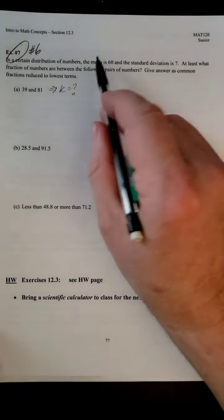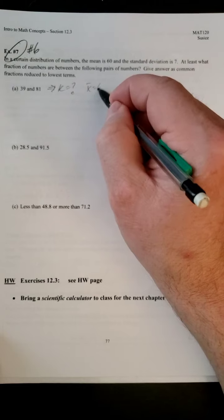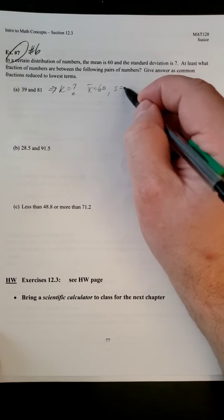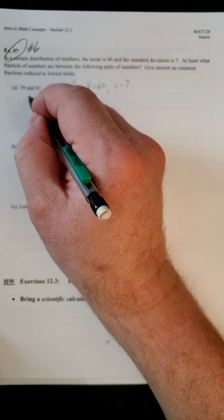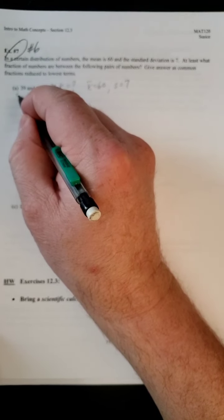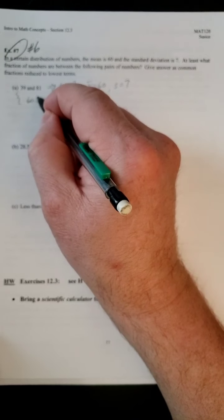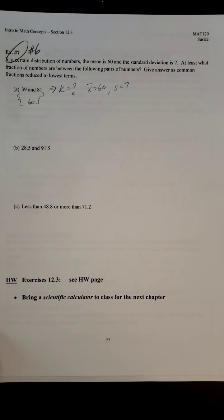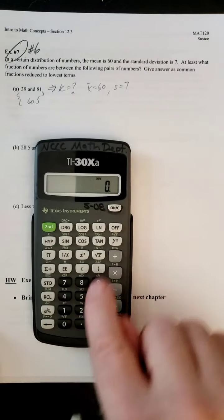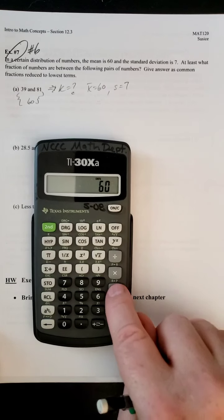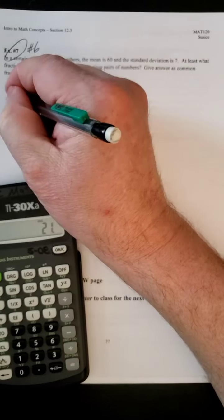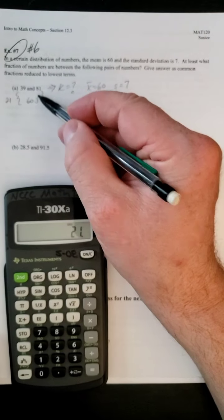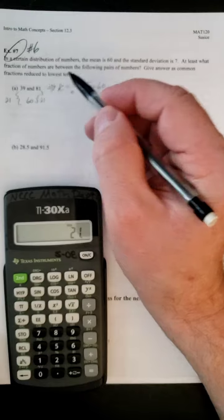The trick is they give you the mean, which is 60, and the standard deviation, which is 7. If we look at this problem, 60 is right smack dab in the middle between these two other numbers. We can check that by doing subtraction. So 60 minus 39, we get 21, and we can see that this is also going to be 21 as well.